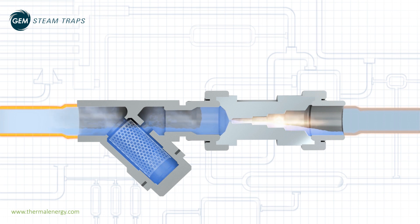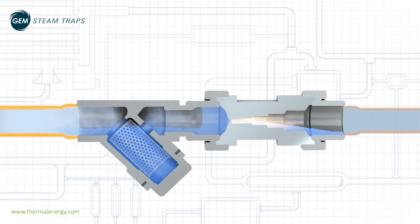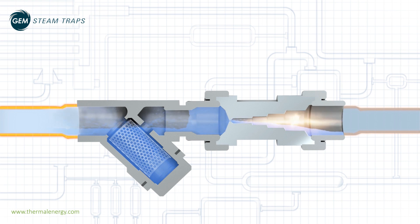Live steam is prevented from escaping, while the denser condensate is preferentially discharged through the trap, all without the need for moving parts.